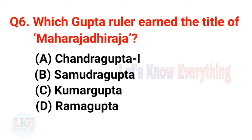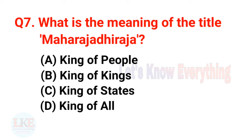Question 6: Which Gupta ruler earned the title of Maharaja Dhiraja? Options: A — Chandragupta I, B — Samudragupta, C — Kumar Gupta, D — Ramagupta. Right answer: option A, Chandragupta I. Question 7: What is the meaning of the title Maharaja Dhiraja? Right answer: option B — King of Kings.